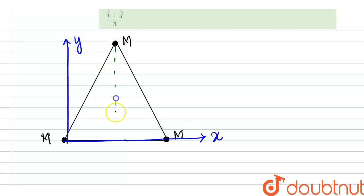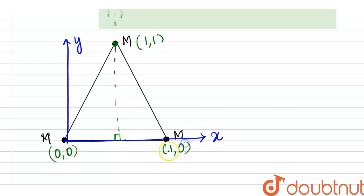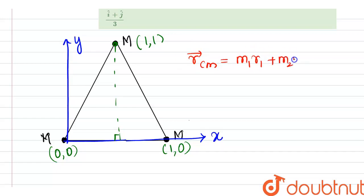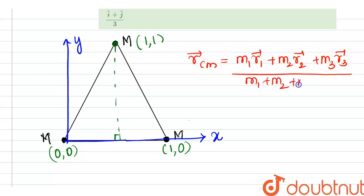Dropping a perpendicular here, this will bisect the side in two. Therefore the coordinate of the top mass will be (1, 1), this mass is (0, 0), and this mass is (1, 0). To find the position vector of the center of mass, R_cm equals M1·R1 plus M2·R2 plus M3·R3 divided by M1 plus M2 plus M3.